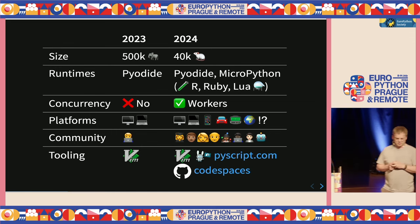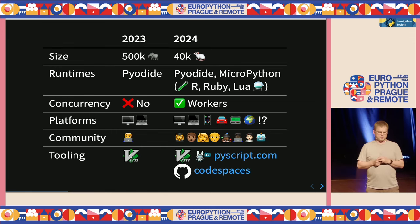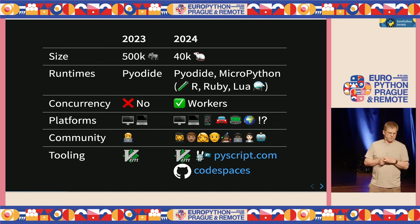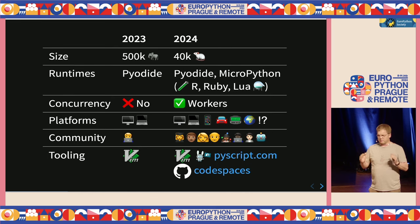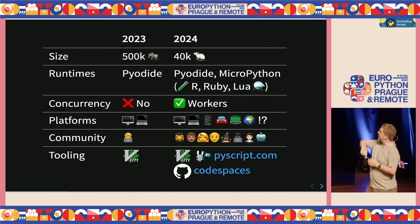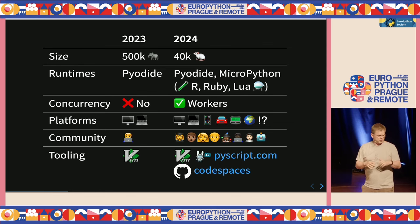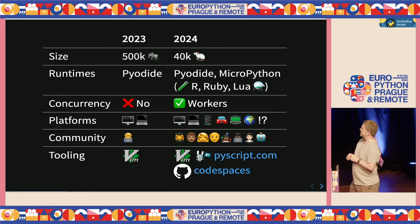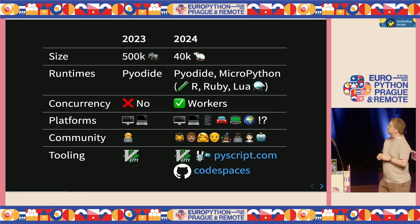We've also got multiple runtimes. This time last year, the only Python runtime we supported was Pyodide — CPython compiled to WebAssembly. But we've also been working with Damien, the maintainer of MicroPython. MicroPython is a very small version of Python, about 160k to download. So with 40k of PyScript itself and MicroPython, in under 200k you've got a working Python interpreter in the browser — smaller than most images on websites.